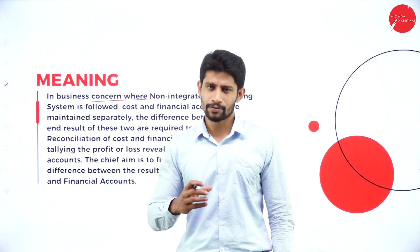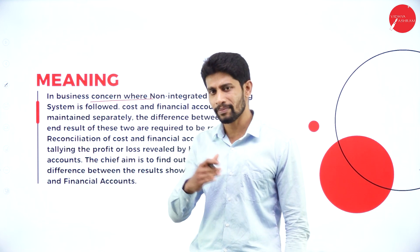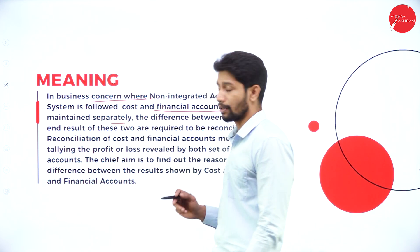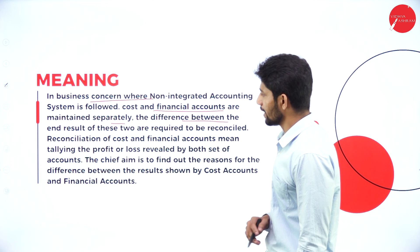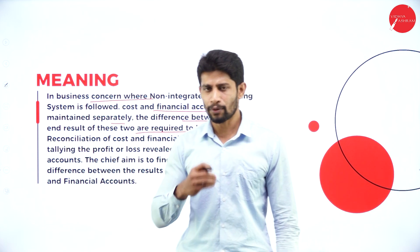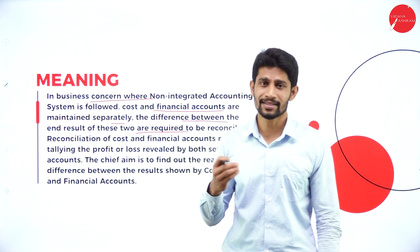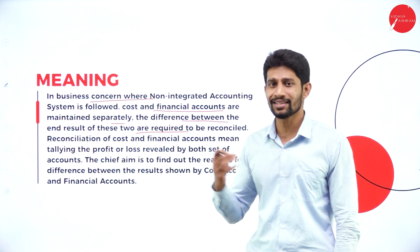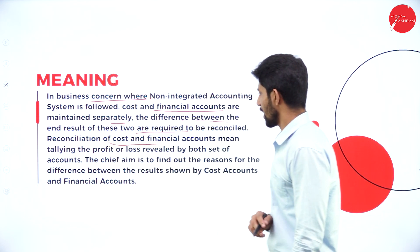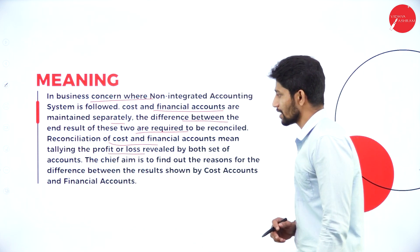For example, if you are maintaining a cost book, the cost book will be different; if you are maintaining a financial book, the financial book will be different. So cost and financial accounts are maintained separately. The differences between the end results of these two are required to be reconciled — you will not get the same profit in the cost book as in the financial book, and you should find out why this difference is showing between the two accounts.